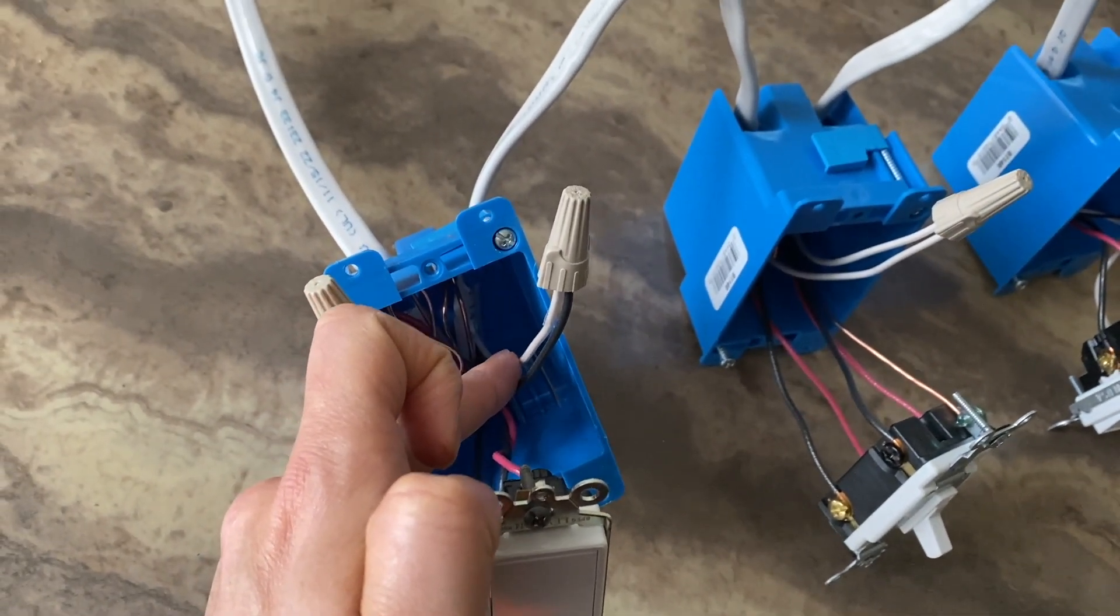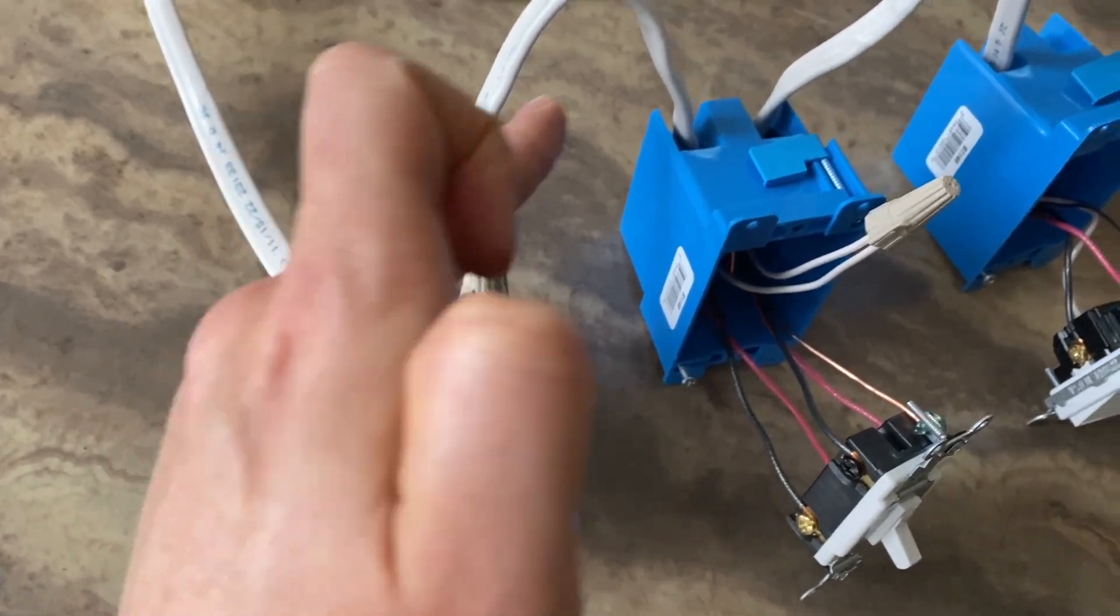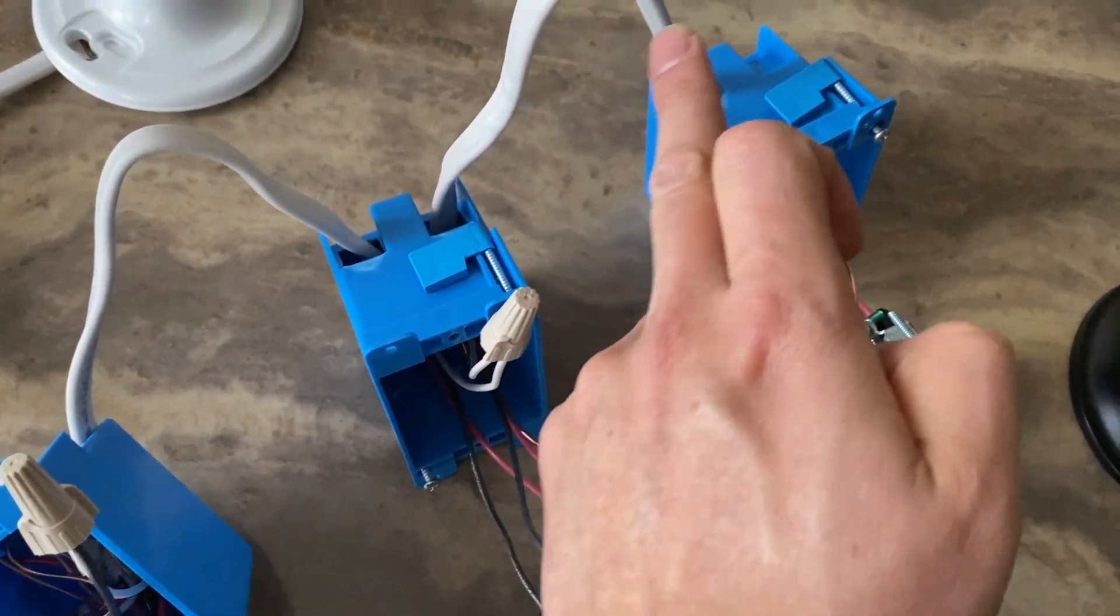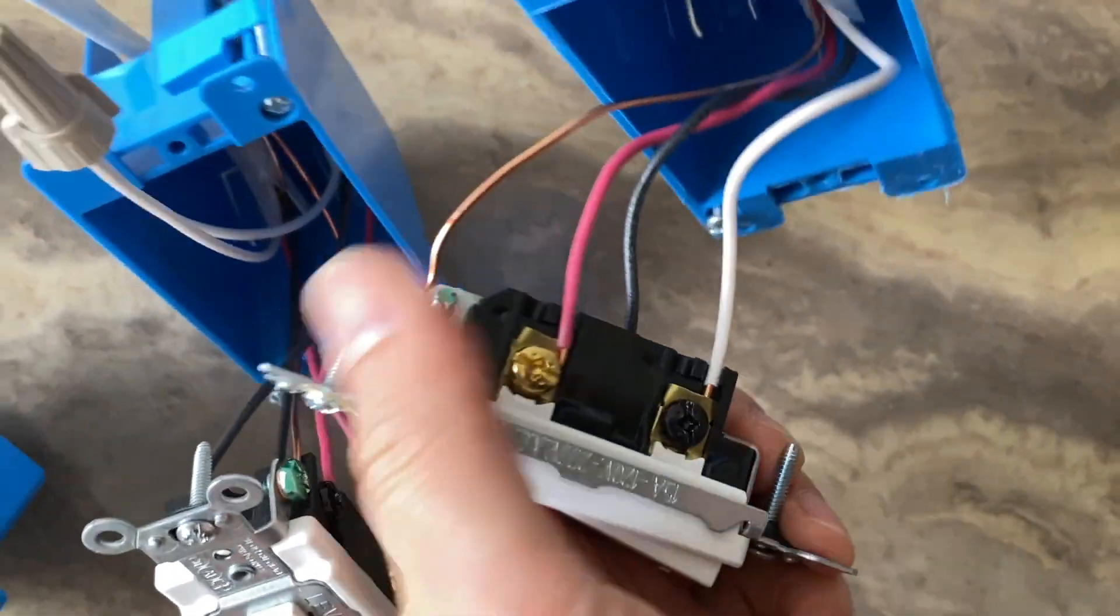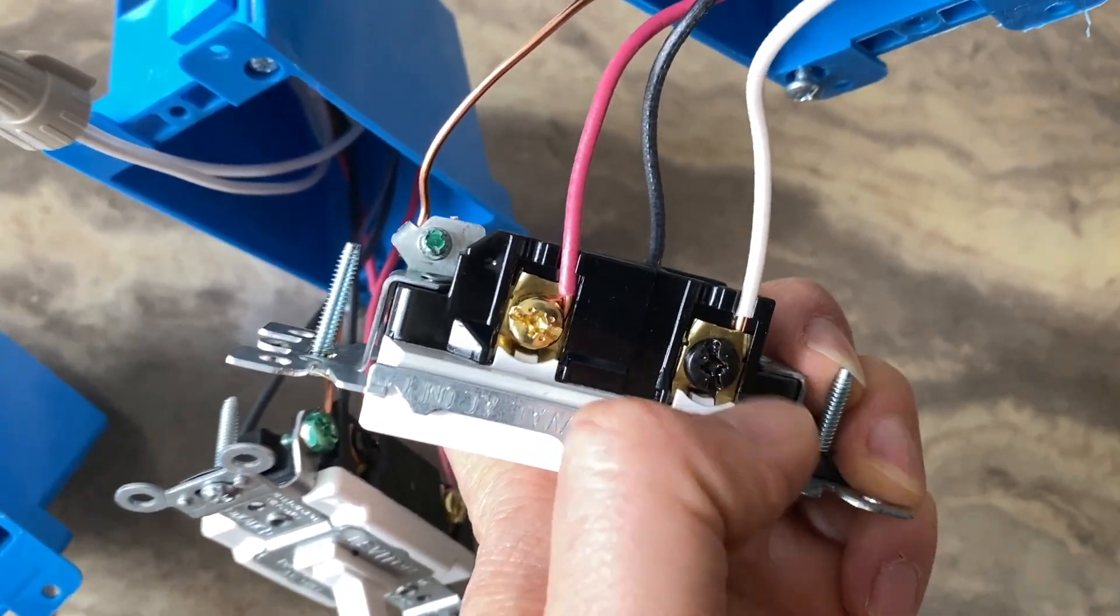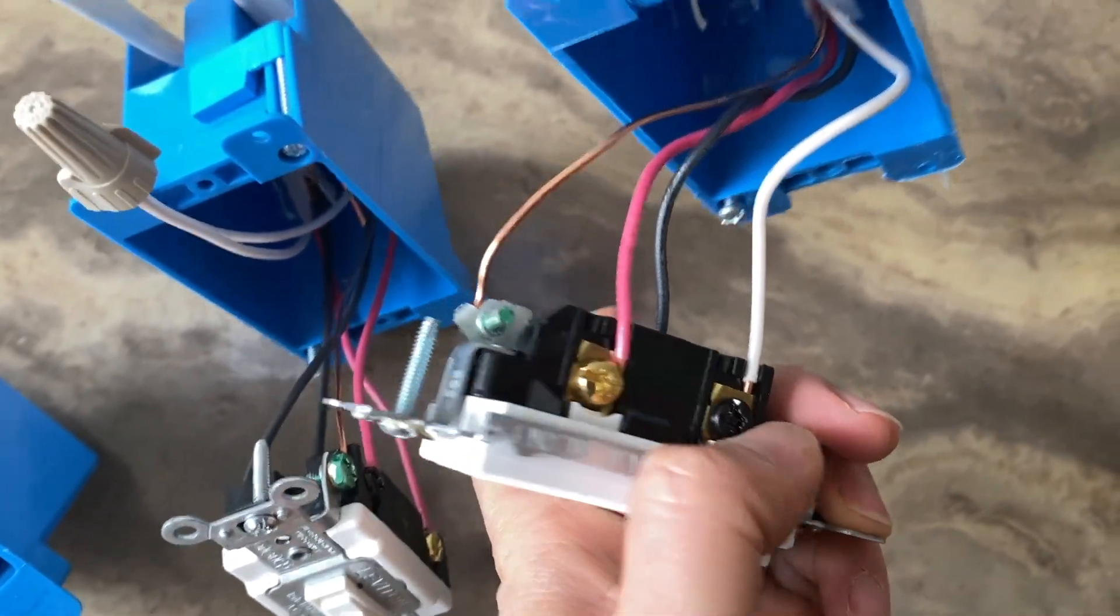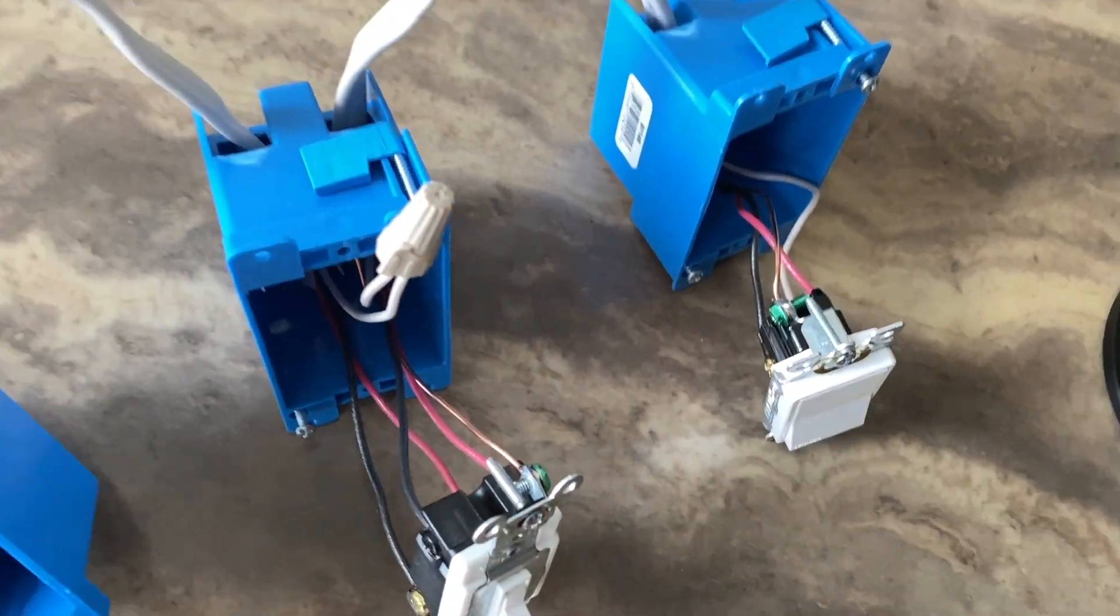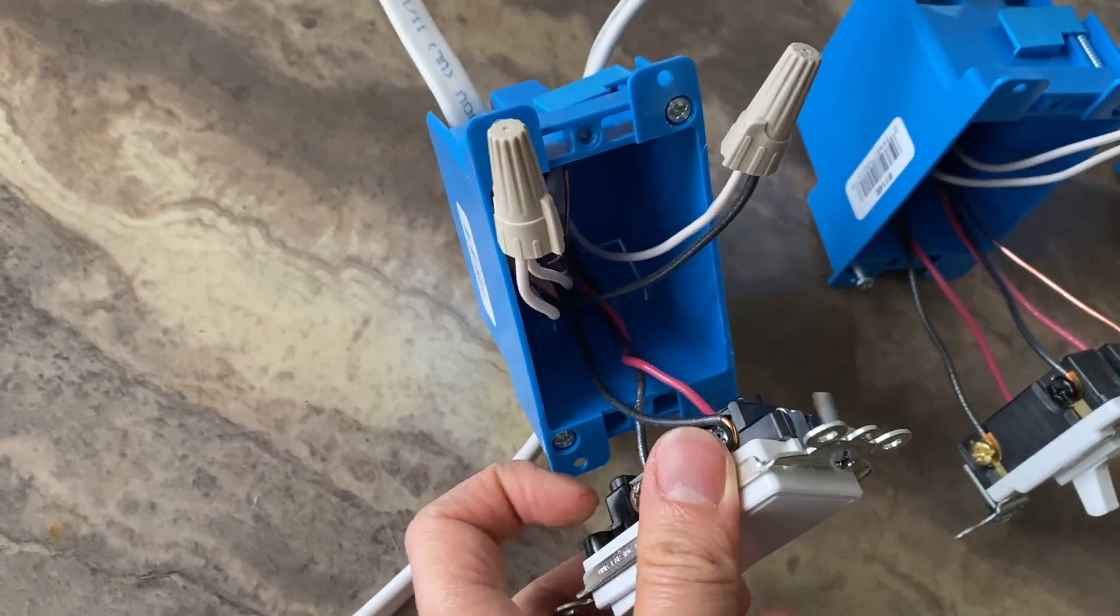And it's basically going from this box all the way to this box, basically acting as a junction box, and all the way to this switch, the last switch. That's our line and it's connected to this black screw here on a three-way switch, and we have these two travelers.